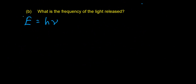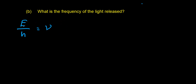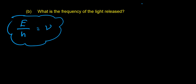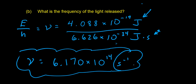The next question asks for the frequency of this particular light. Using E = hν and rearranging, frequency ν = E/h. Using the energy from the previous part and Planck's constant, we get a frequency of 6.170 × 10¹⁴ s⁻¹. The s⁻¹ means cycles per second — that means 6.170 × 10¹⁴ wave crests would pass a point every second.